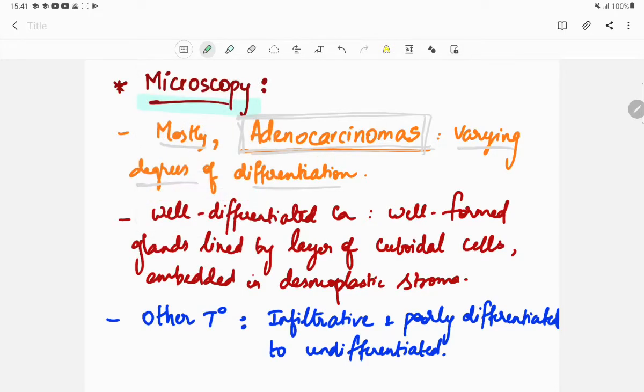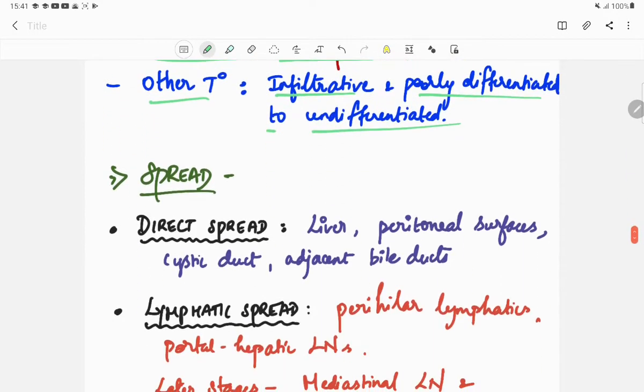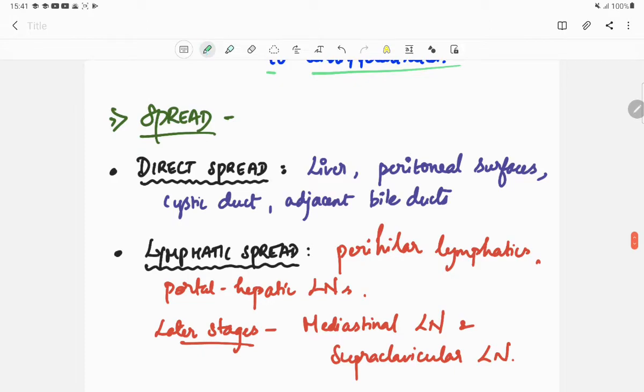Well-differentiated carcinomas have well-formed glands which are lined by a layer of cuboidal cells, embedded in desmoplastic stroma. Whereas other tumors are infiltrative and poorly differentiated to undifferentiated. This is the microscopy of gallbladder carcinoma.